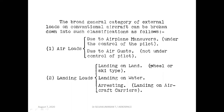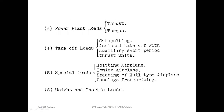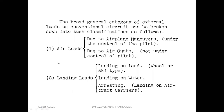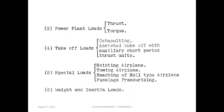The loads acting on a conventional aircraft can be categorized as: air loads — due to airplane maneuvers (under pilot control) and gusts (not under pilot control); landing loads — on land or on water, and arresting loads (when landing on a carrier ship); power plant loads — thrust, torque, takeoff catapulting, and assisted takeoff; and special loads — hoisting, towing, fuselage pressurizing, and weight and inertial loads.